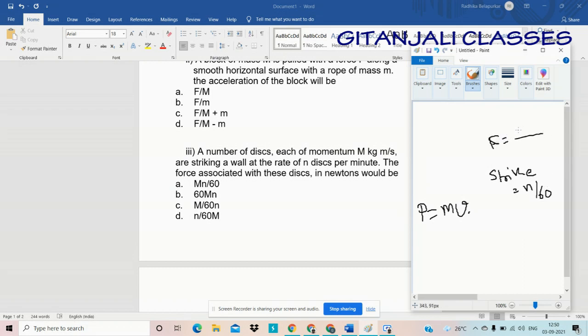F equals dP by dt. So for me F equals M into N by 60. So here the option which is correct is A: M into N by 60.